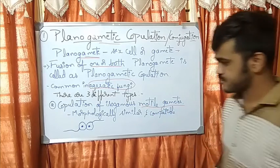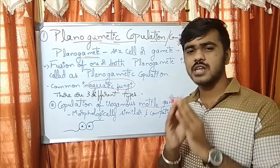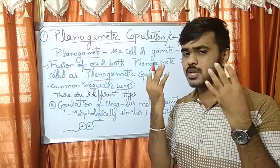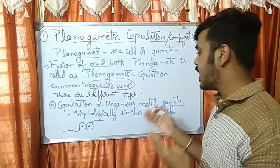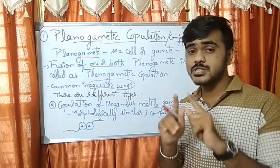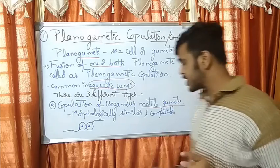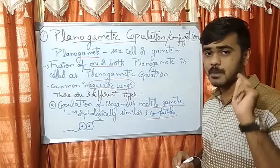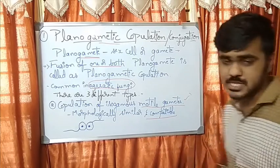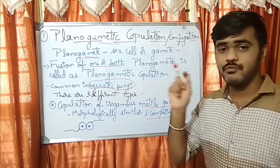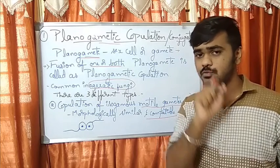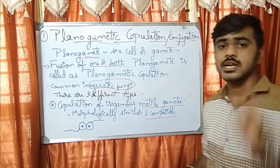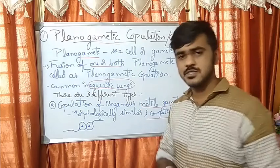The first type is copulation of isogamous motile gametes. If both gametes are morphologically similar and both are planogametes — both are motile — but importantly, both must also be compatible. If they are compatible, this copulation will take place; otherwise it will not. When writing the definition, mention that they are morphologically similar planogametes and both are compatible with each other.